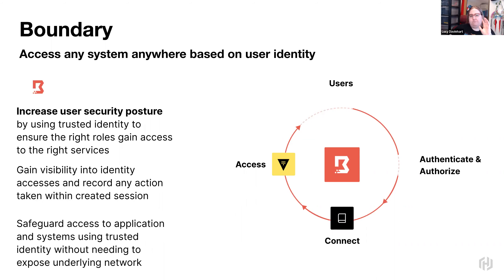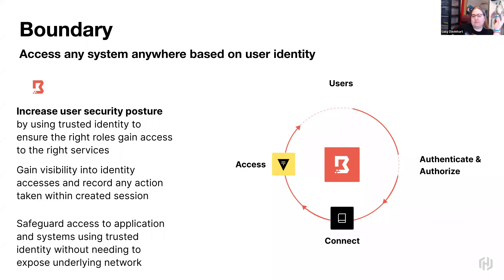Once a user has decided which target host they want to access, this is where Boundary and Vault shine together. The native integration with Vault provides the user with passwordless access — Vault automatically generates and injects those credentials for the user, never exposing them to the user for increased security. Since Boundary acts as a time-limited proxy to target endpoints, the user is only exposed to the particular resources they need access to, rather than the entire network.